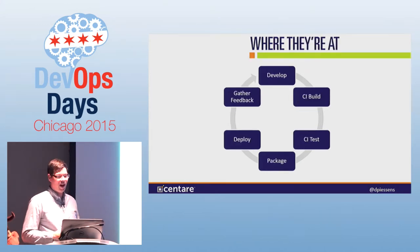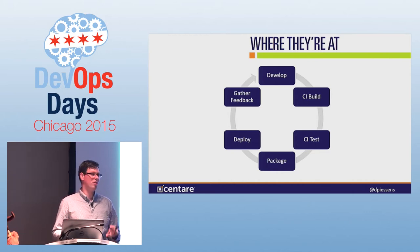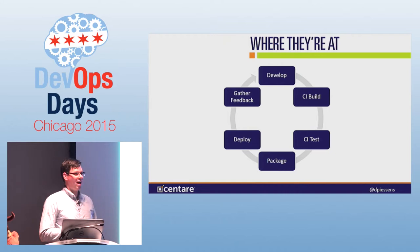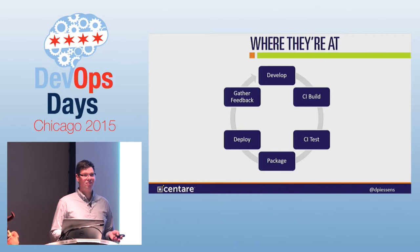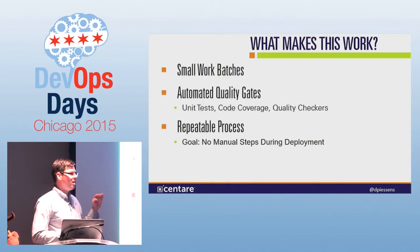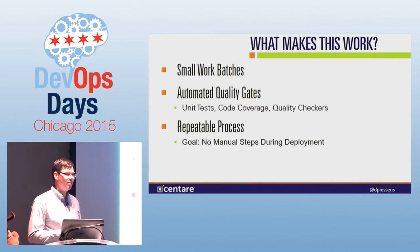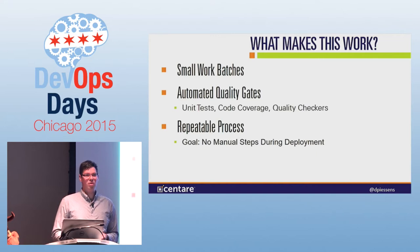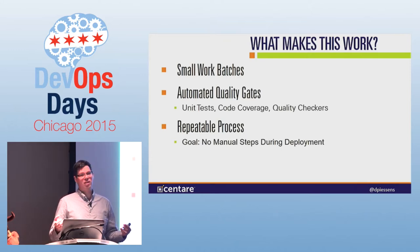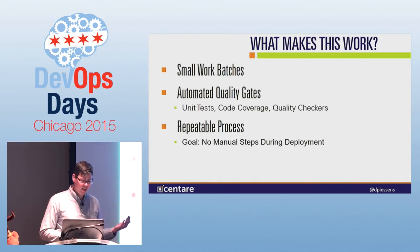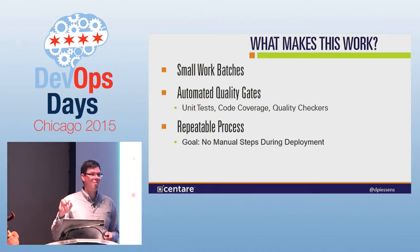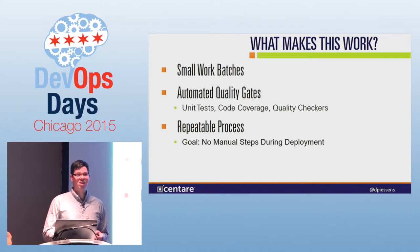There's a much better way to get a feedback cycle here: develop, use a continuous integration server to build and test, package up your code, treat it as an artifact, deploy it, get feedback. The key principles are small work batches — building every single check-in. Automate quality gates: unit tests, code coverage, and any other quality checkers, every single test run. Most importantly, I want a repeatable process with no manual steps. The goal is I click a button and everything just works.